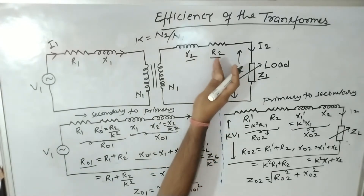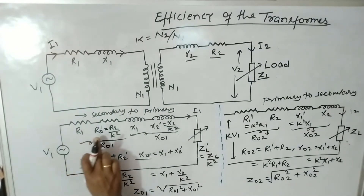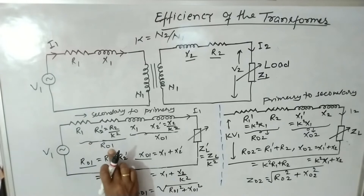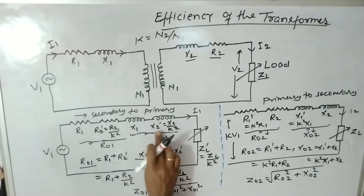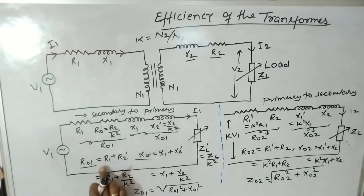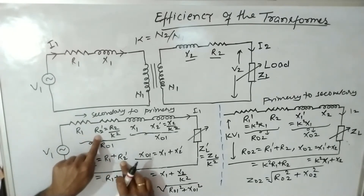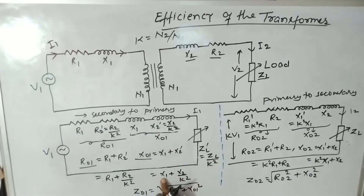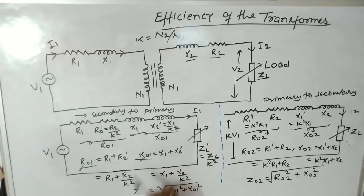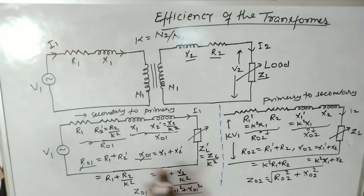When all secondary elements are shifted to the primary side, the total resistance is R1 + R2-dash, which is called R01. The total reactance is X1 + X2-dash, which is called X01. Therefore R01 = R1 + R2/K², and X01 = X1 + X2/K². The total impedance on the primary side is Z01 = √(R01² + X01²).